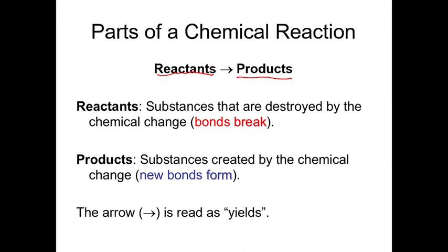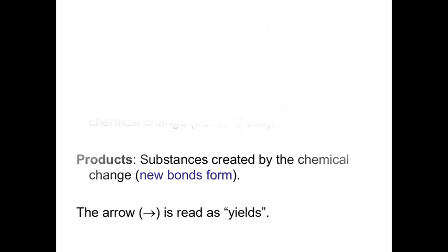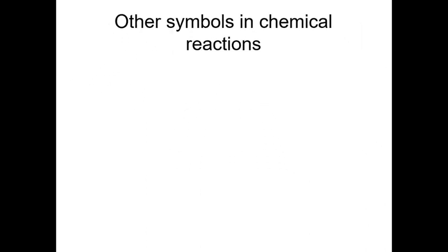The arrow in a chemical reaction means 'yields' — basically something is produced. Please, I beg of you, never ever in your life, especially in grade nine where we'll be doing a lot of chemical reactions, never use an equals sign in a chemical reaction. It's an absolute no. We use an arrow.